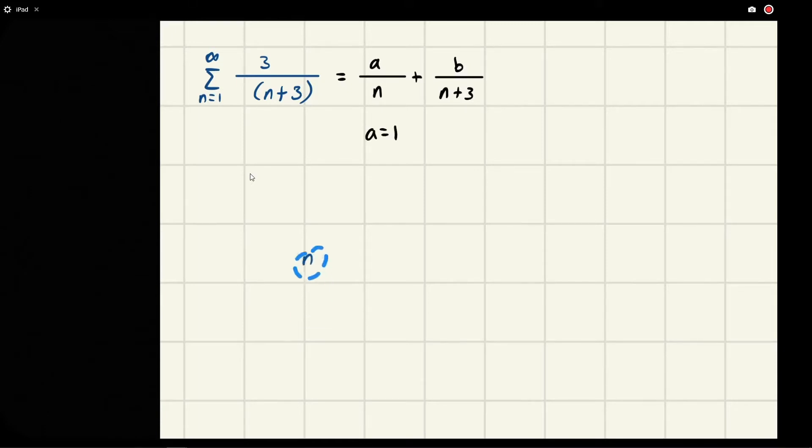So this is the cover-up method. And then for the next term, right, if we're looking at this n plus 3 here, n plus 3 is 0 at negative 3. So we cover up that term, so we take this and we cover it up.